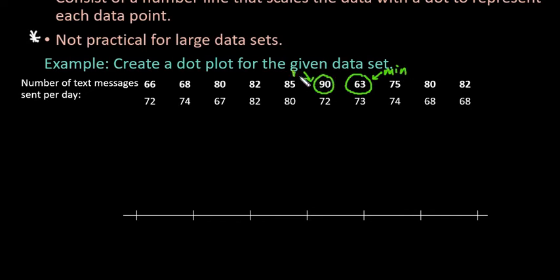So when we're creating a scale for this, we want to make sure that it goes from 60 to 90. So I put enough tick marks here. I'm going to let this represent 60, 65, 70, 75, 80, 85, 90.